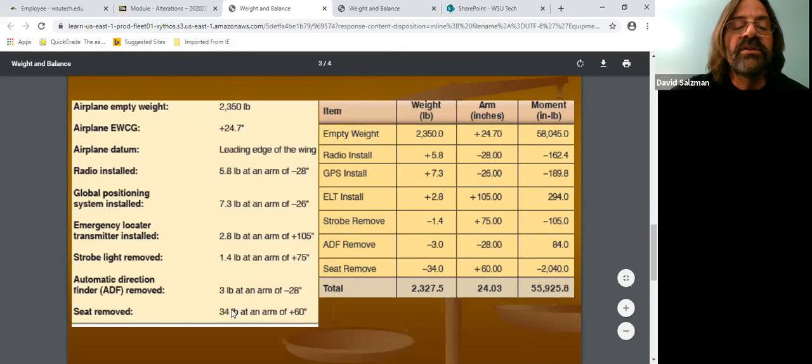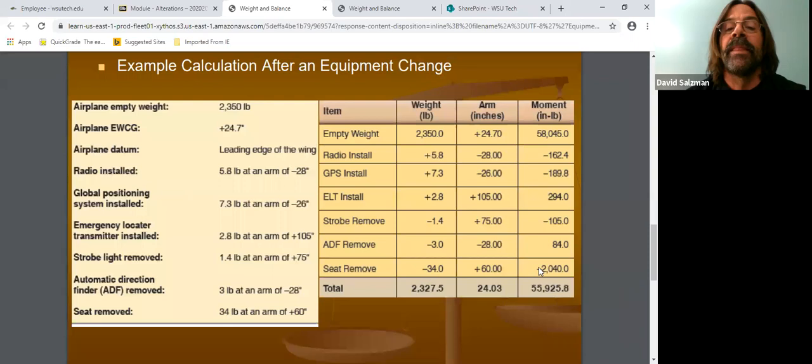And then the last one is they removed a seat. So that's a negative 34 pounds. Located at station 60. You multiply that across. That gives me a negative 2,040.